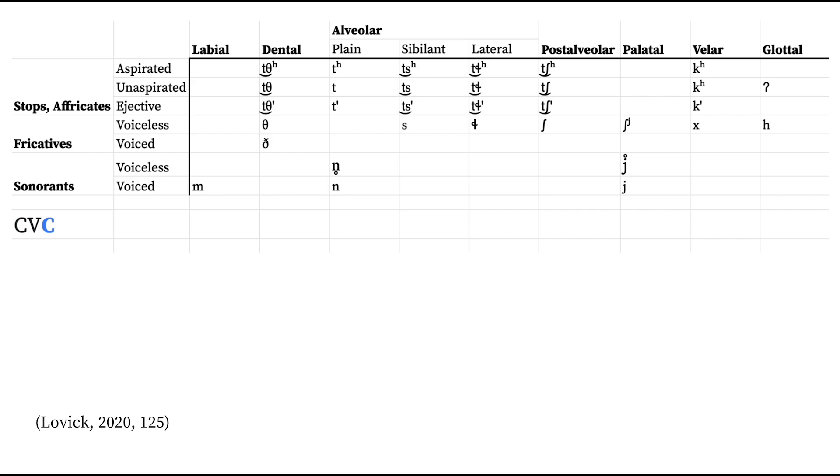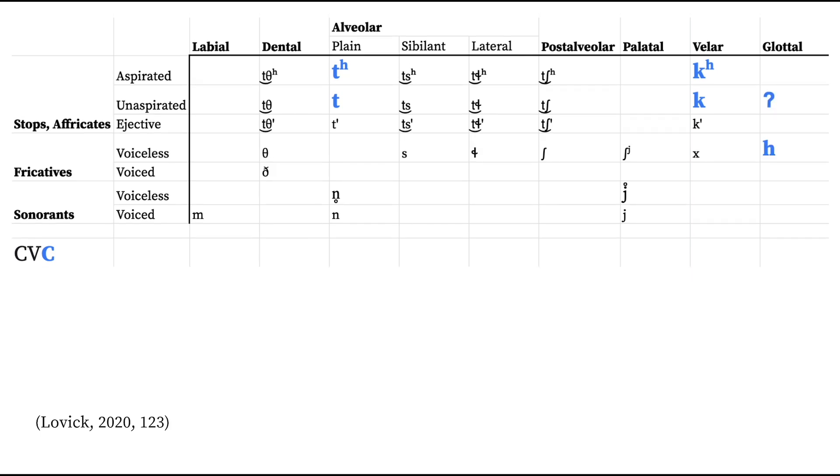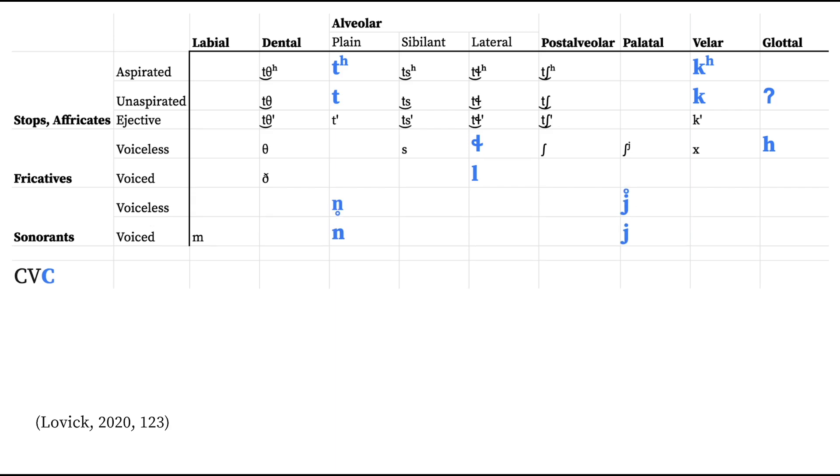Only some consonants may end a syllable. The aspirated and unaspirated alveolar and velar stops, the glottal stop and fricative, the lateral fricative and approximant, and the voiced and voiceless palatal approximant and alveolar nasal. Most fricatives and no ejectives or affricates are allowed in the coda position.